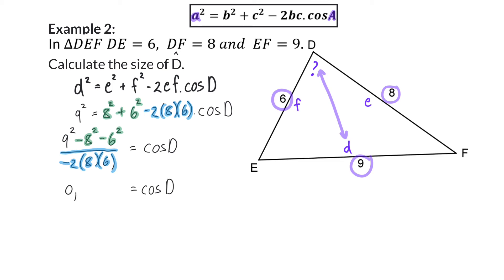Cos D is then equal to 0.1979, and if I now press shift cos of this 0.1979 on my calculator, I will get a reference angle, with which the first quadrant's answer will then be 78.58 degrees. And because we are working with cos, and the second option for cos will be in the fourth quadrant, we do not need to calculate it, because any angle size in the fourth quadrant cannot form part of a triangle. There is therefore only the one solution for D, and that is 78.58 degrees.